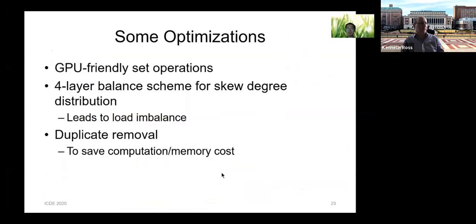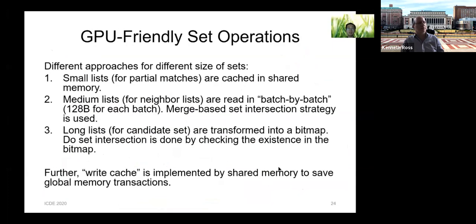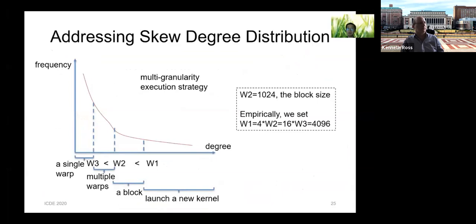GPU architecture optimizations include: for set operations, different strategies are used for different set sizes — small lists are cached, medium lists are read batch by batch, and long lists are transformed into bitmaps. Due to graph irregularity, workload per warp may be imbalanced. For large workloads, new warps are launched. For medium workloads, the entire block processes them. For smaller workloads, multiple warps divide tasks evenly. For the smallest loads, a single warp handles them. Shared memory is also programmed to share input buffers among warps.